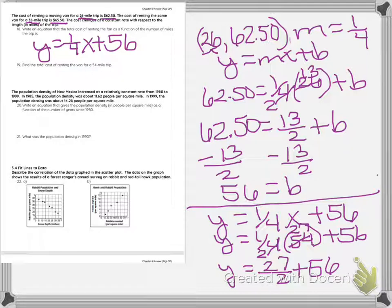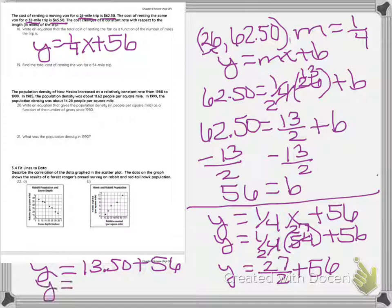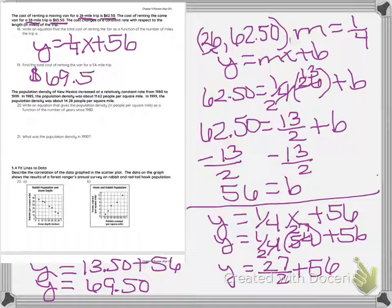So then I get Y equals 27/2 plus 56, and I'm going to combine those. So I'm going to convert the fraction to decimal, and I get Y equals 13.50 plus 56, so then I'm going to add those, and I get 69.50. So problem 19, the total cost of renting the van for 54 mile trip would be $69.50.